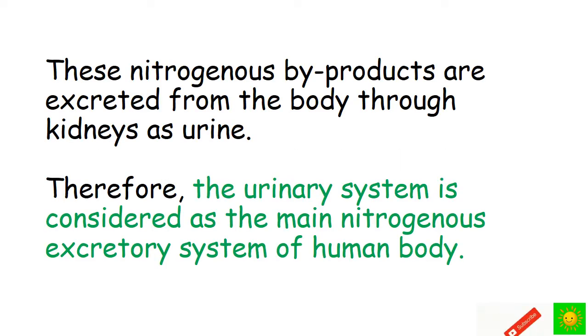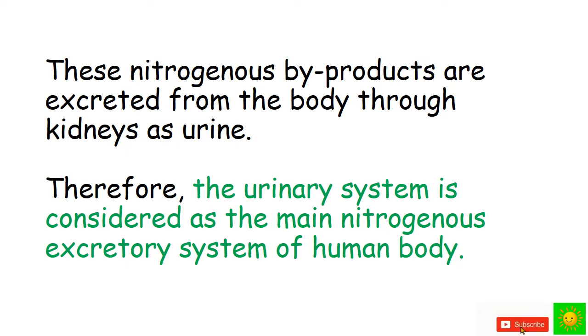We are now going to discuss the human urinary system. During chemical reactions in human cells, nitrogenous byproducts are produced. These nitrogenous byproducts are excreted from the body through the kidneys as urine, therefore the urinary system is considered the main nitrogenous excretory system of the human body.